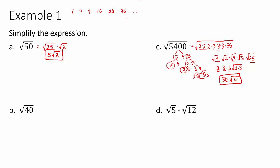You could have also divided 5400 by 100 first, getting √54 × √100. The square root of 100 is 10, and then you'd check 54: it goes to 9 and 6, and 9 is a perfect square, so you'd need to simplify again. It doesn't matter if you pick the right factoring the first time, as long as you can start the problem somehow.